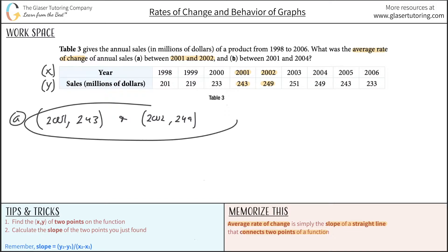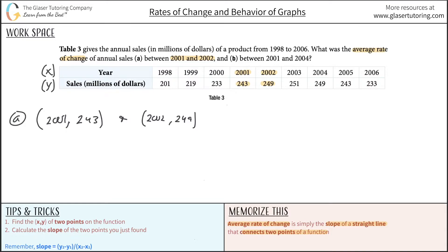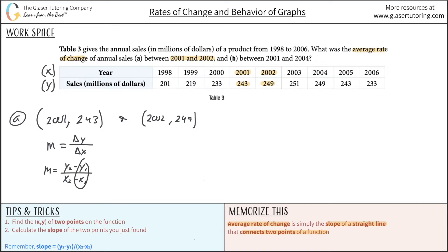To find the average rate of change between these two points, all I have to do is calculate the slope. The slope formula is m = (y2 − y1) / (x2 − x1). Let's call (2001, 243) our point (x1, y1) and (2002, 249) our point (x2, y2).